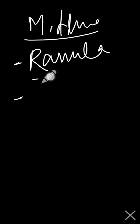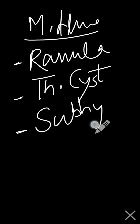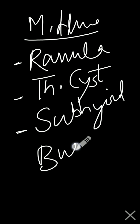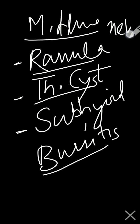Today we are going to discuss the thyroglossal cyst. Thyroglossal cyst is a midline neck swelling. Midline neck swellings are basically of three types: ranula, thyroglossal cyst, and subhyoid bursitis. These are the three main midline neck swellings.